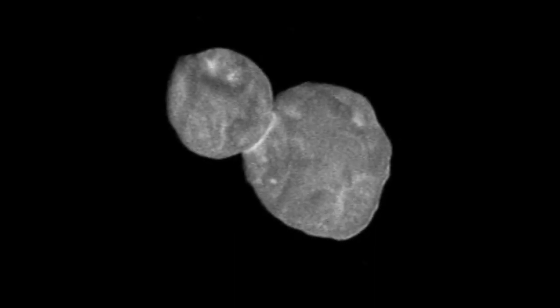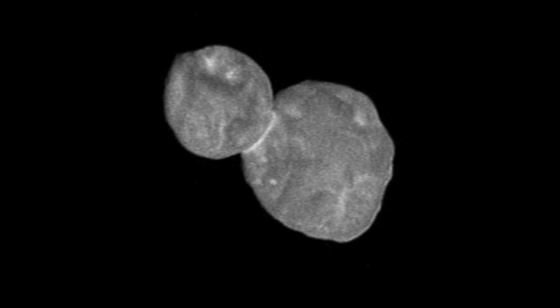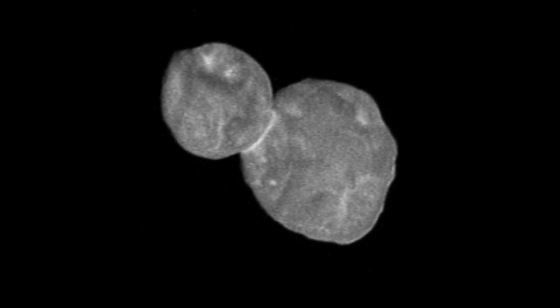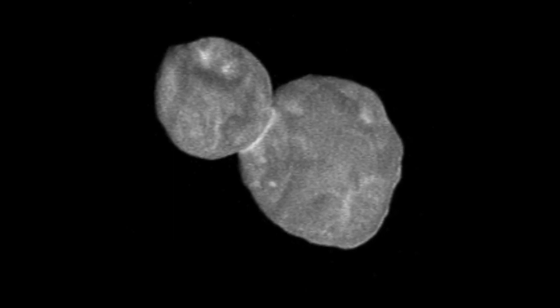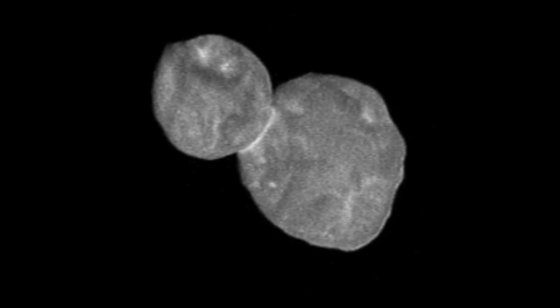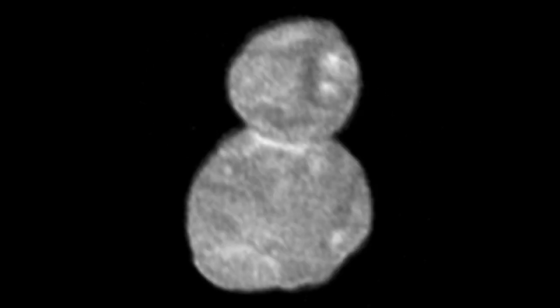486958 Arrakoth is the most distant object ever explored and is also known as 2014 MU69 by its original designation. It was discovered on the 26th of June 2014. In the Algonquian language, Arrakoth means sky. New Horizons principal investigator Alan Stern claimed the name Arrakoth reflects the inspiration of looking to the skies and wondering about the stars and worlds beyond our own.